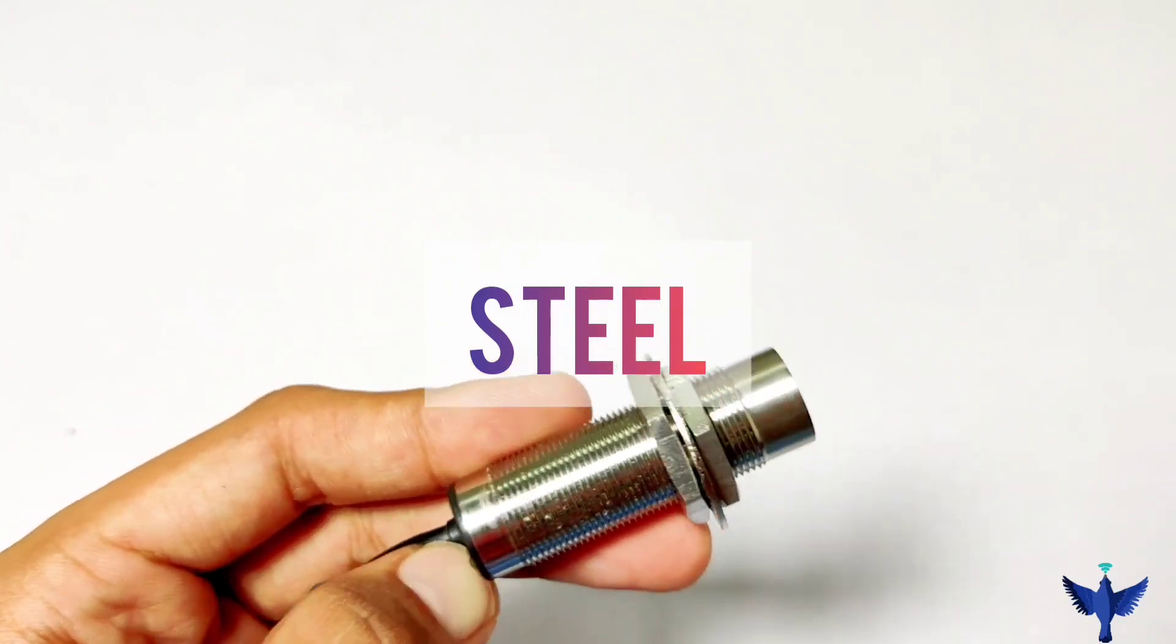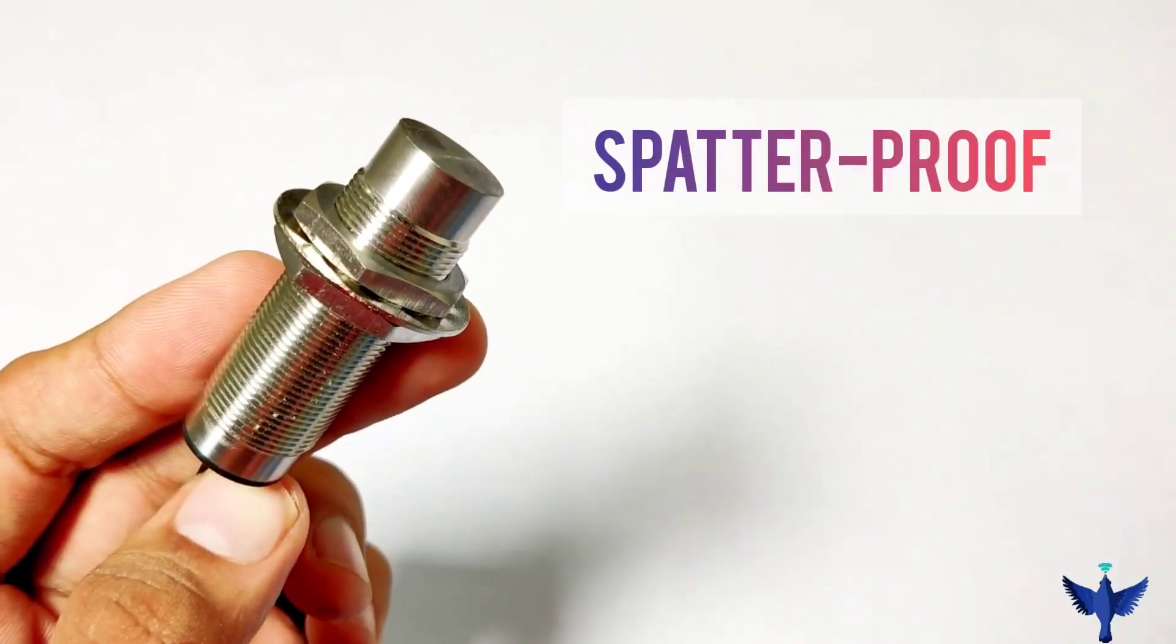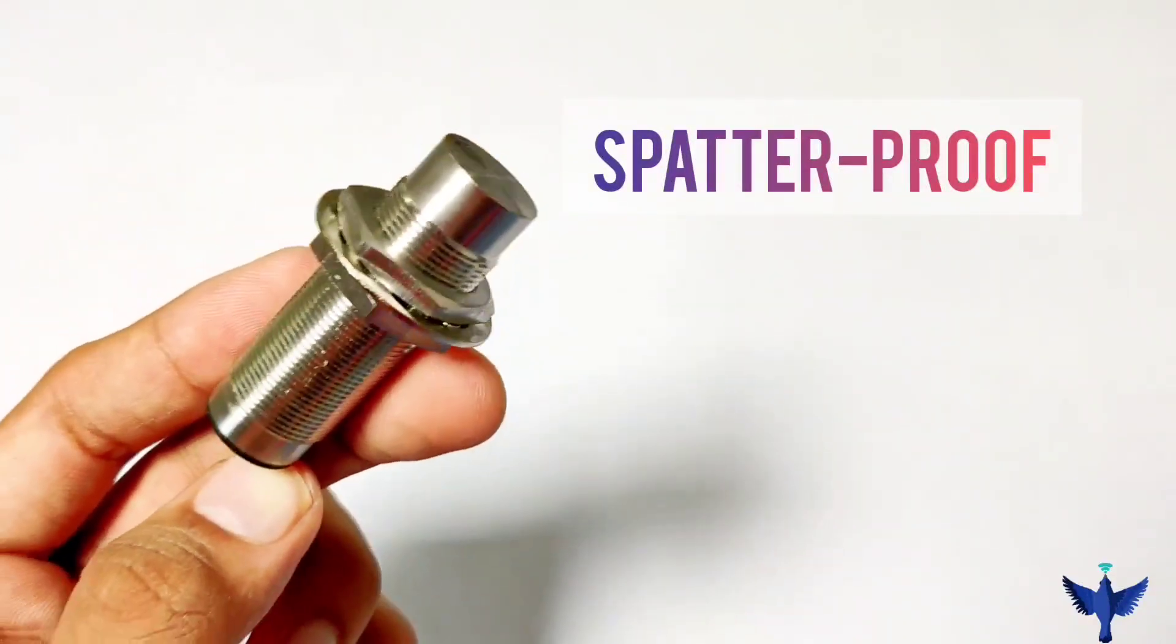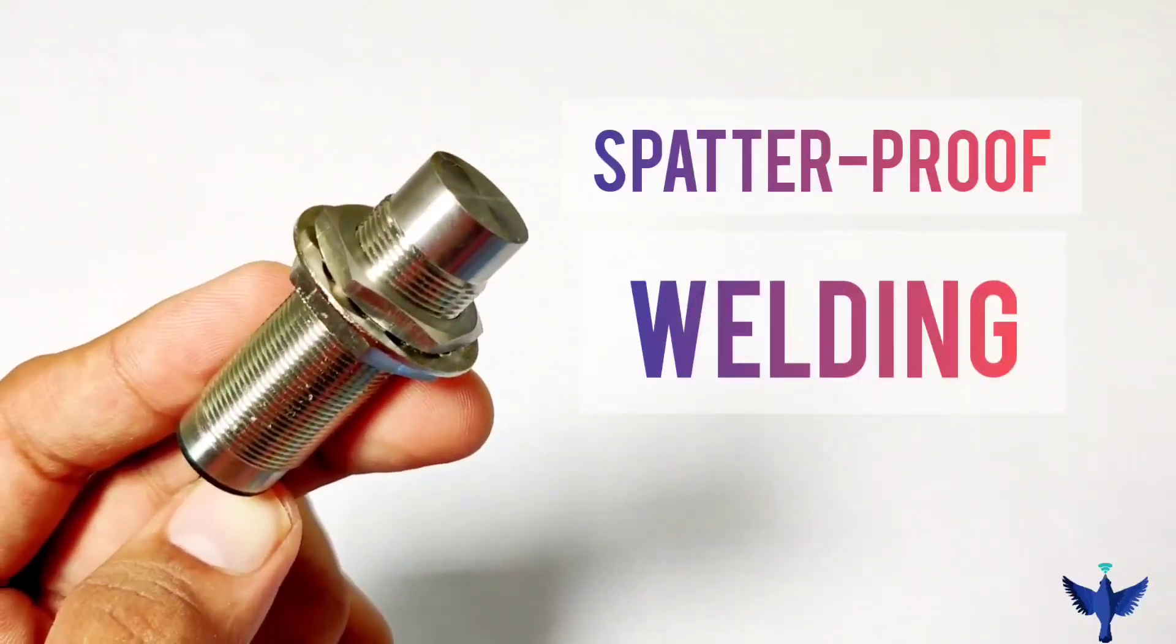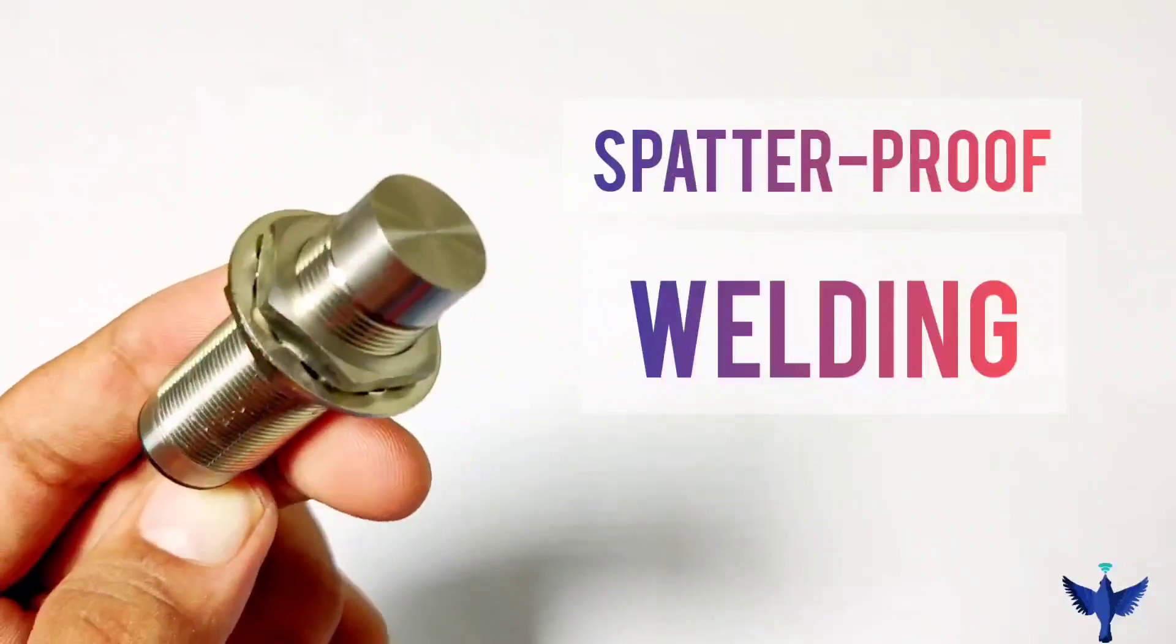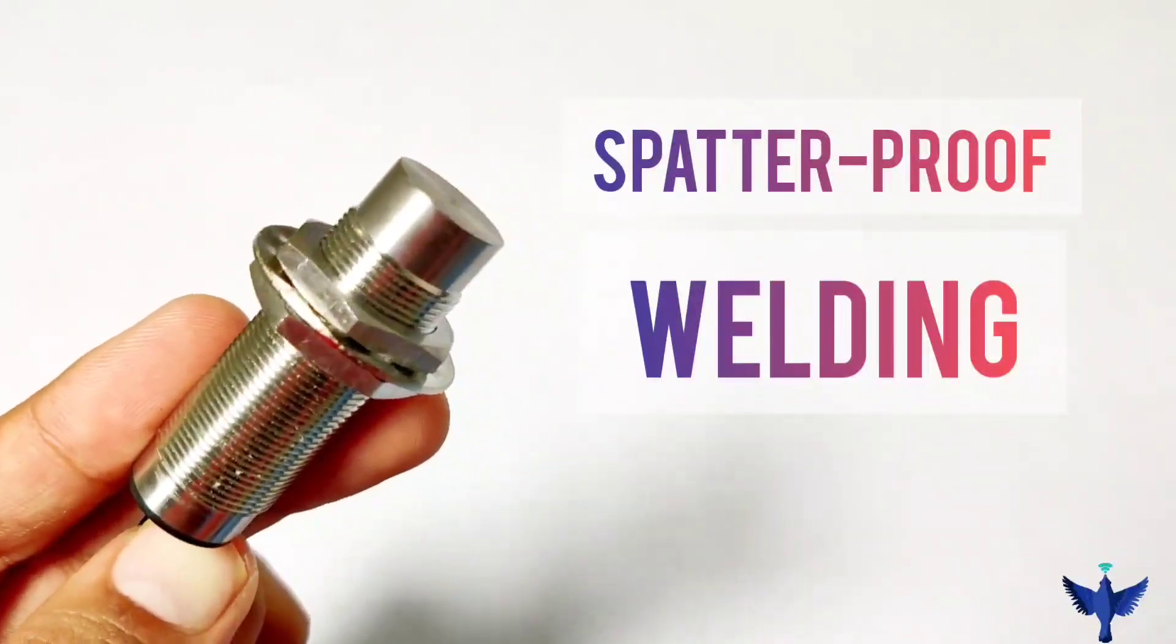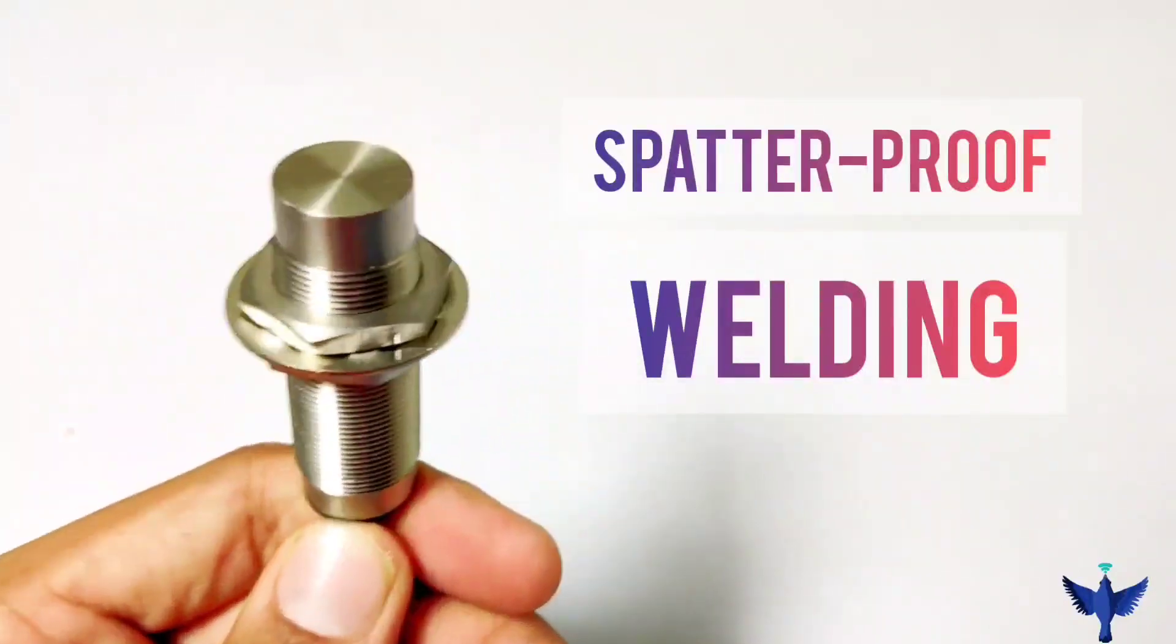We need to understand the importance of this sensor. First, it is spatter proof, which means this sensor can be used when doing welding. When we do welding, sparks come out that might affect the sensor's body. This sensor is immune to those sparks, or spatter, making it a spatter proof sensor.